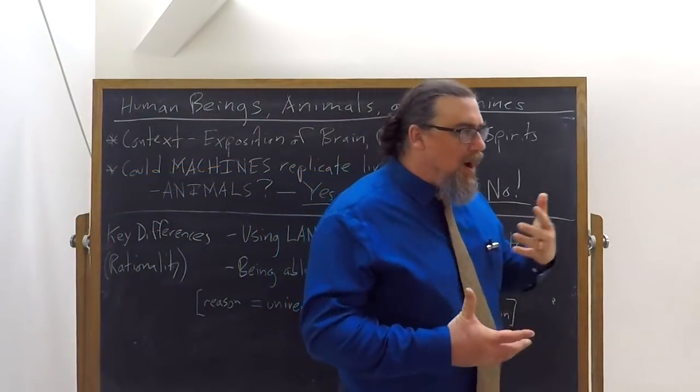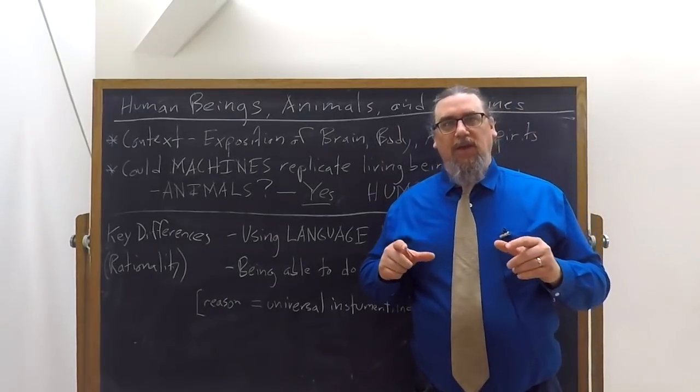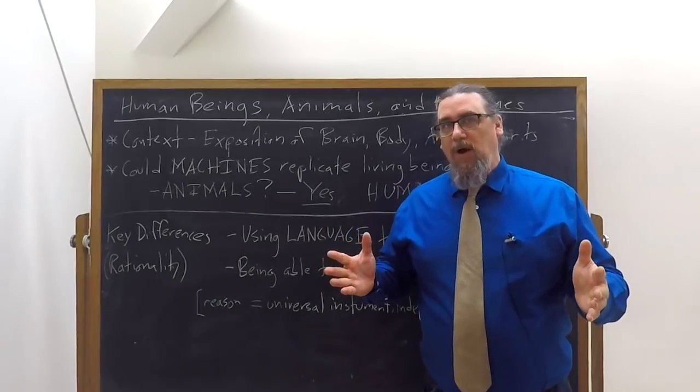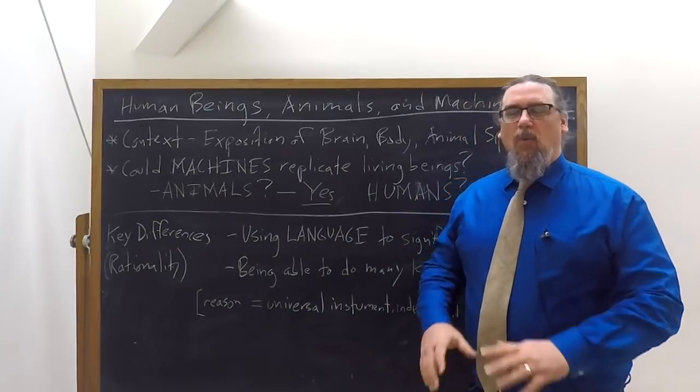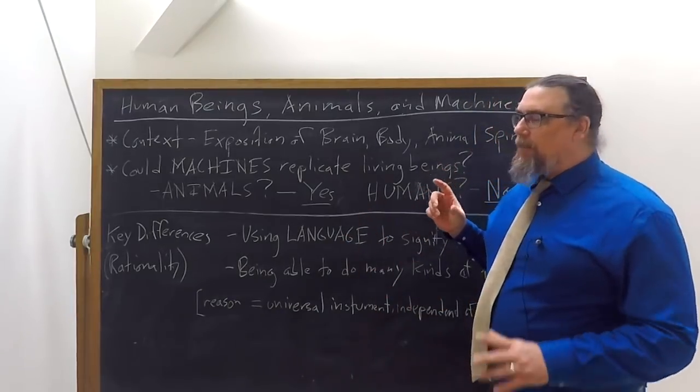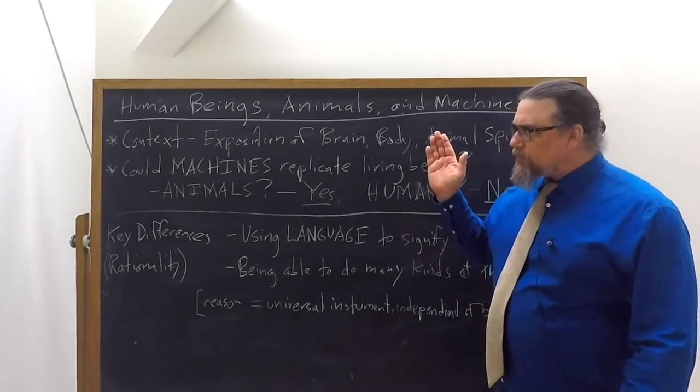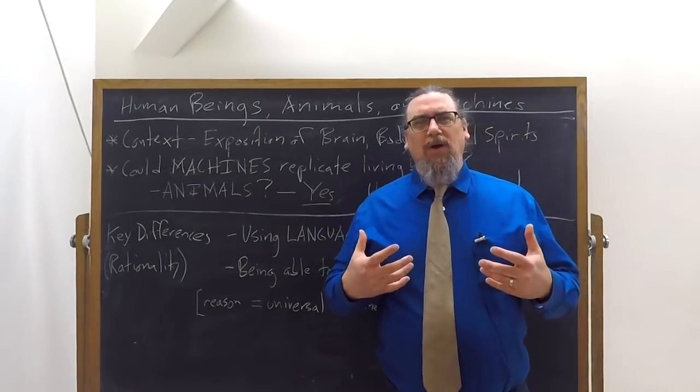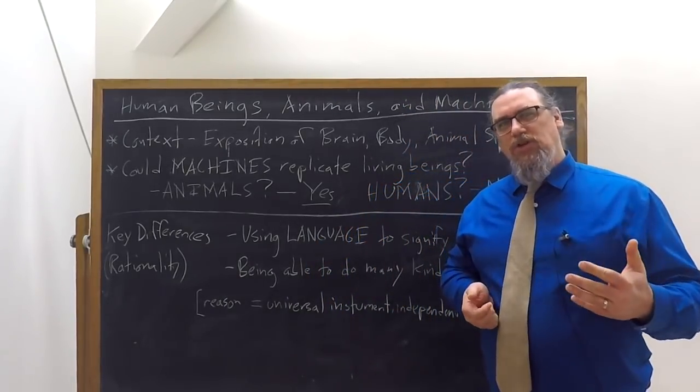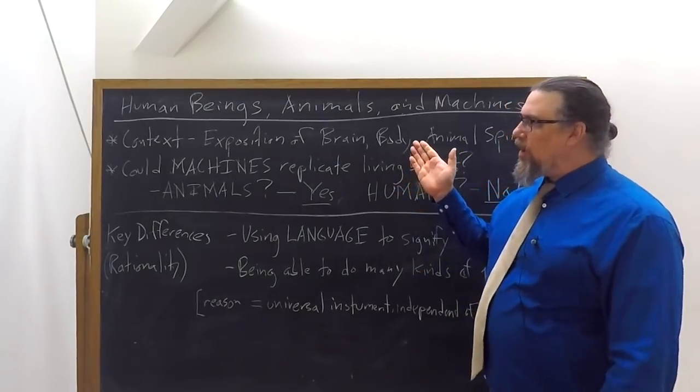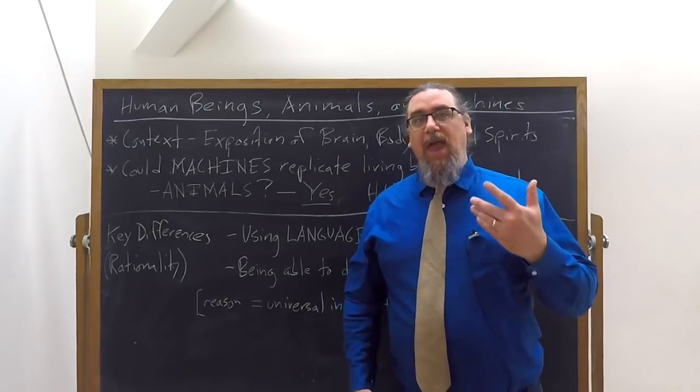Descartes introduces another wrinkle into this, which makes good sense given his metaphysics, in talking about machines. And why does he bring this in? What's the context here? So he's actually discussing, in part five, a book that he didn't publish called The World, and he's telling us about the different things that he went over in that.